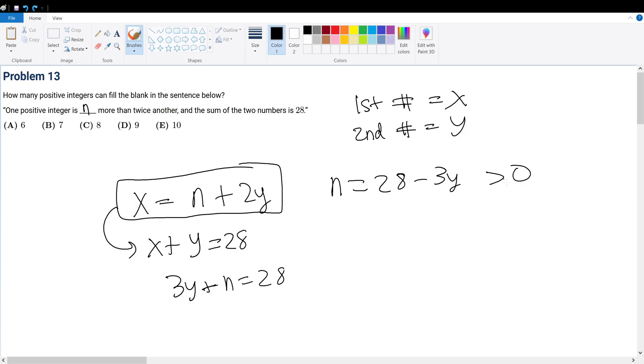So in other words, 28 - 3y is larger than zero, and 3y cannot exceed 28. So -3y is larger than -28, which means y is less than 28 divided by 3. And what is that? Well, 27 divided by 3 is 9, so if we increase the numerator, then this quantity will be a little over 9.